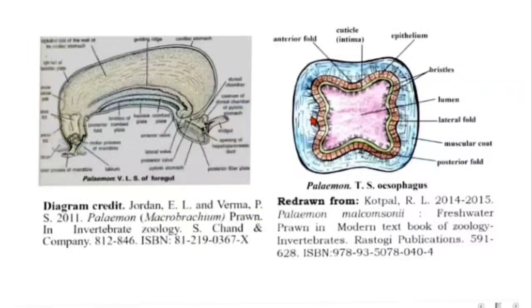The esophagus leads above into the stomach by a wide aperture. The posterior and lateral folds of the esophagus wall extend into this aperture and together serve as a valve to check the return of the food.